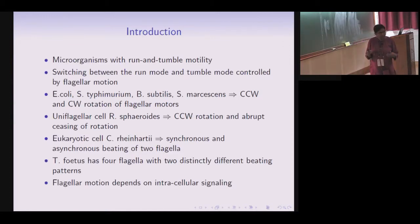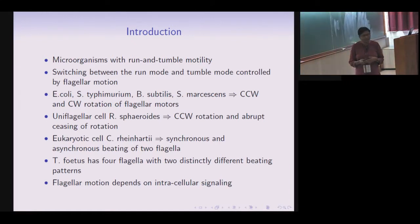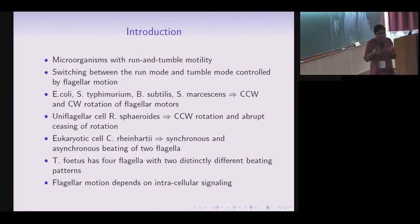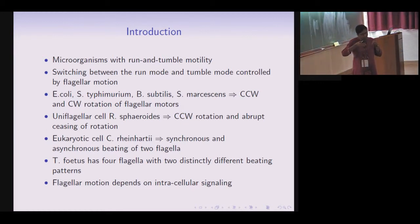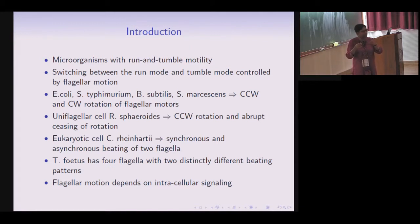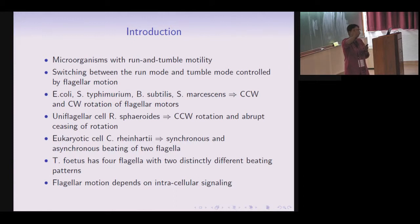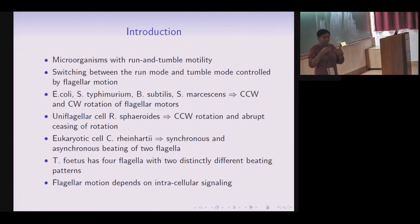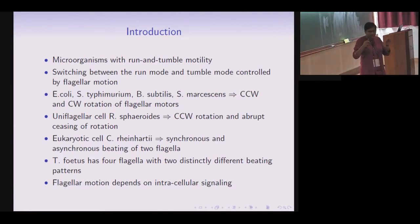There are many organisms in nature which move around using run-tumble motility. Briefly, during a run you expect the organism to move along roughly a straight line, and during a tumble you expect it to randomly rotate about itself without much net displacement. So it runs for some distance, then tumbles, then runs again in a new direction, like this.